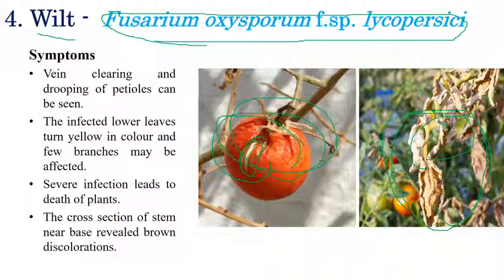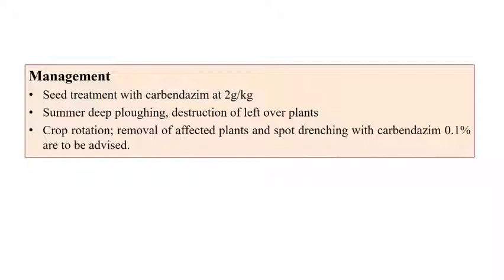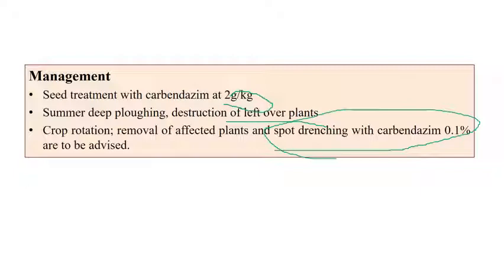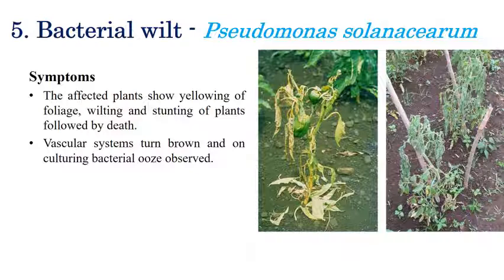For management of Fusarium wilt, seed treatment with Carbendazim at 2g/kg seed is recommended. Biocontrol agents are highly effective since this is strictly a soilborne pathogen. Deep summer plowing and destruction of plant debris from previous cropping seasons is advised. Crop rotation, removal of infected plant material, and soil drenching with Carbendazim at 0.1% can also be recommended.